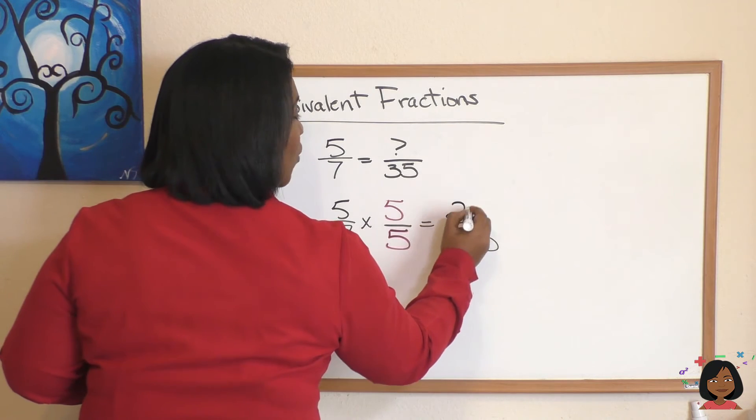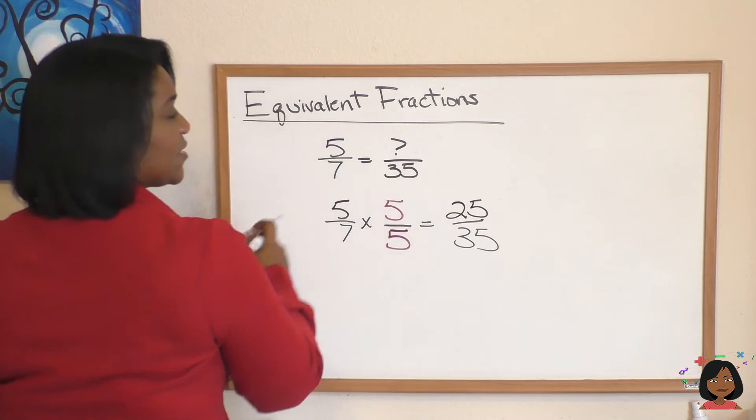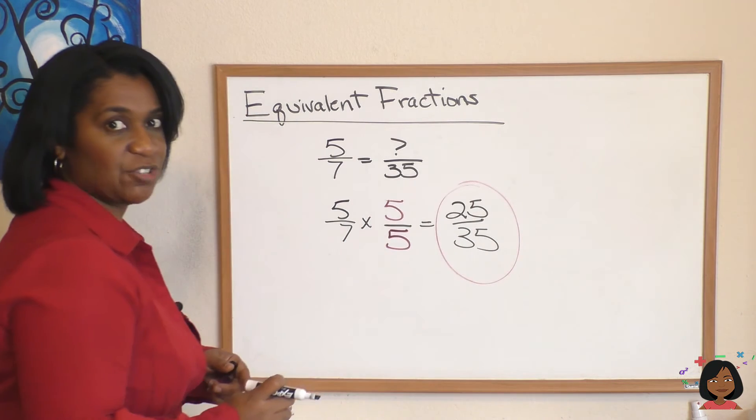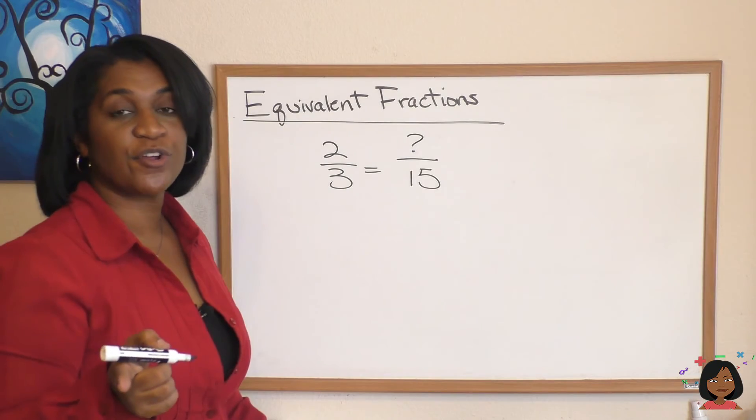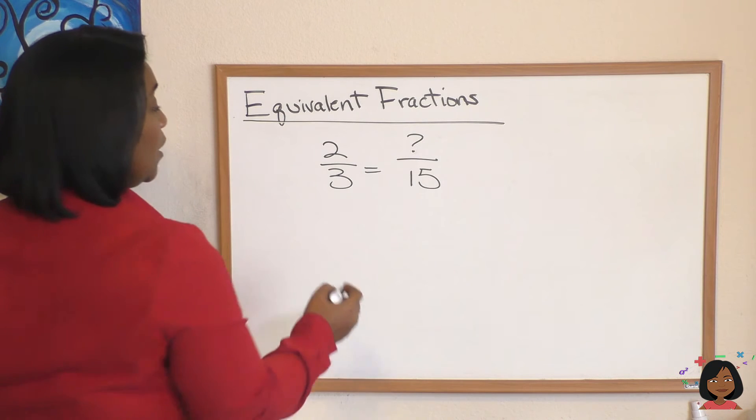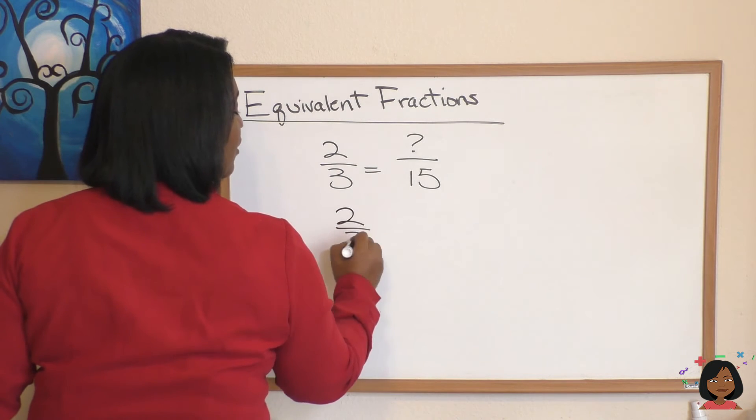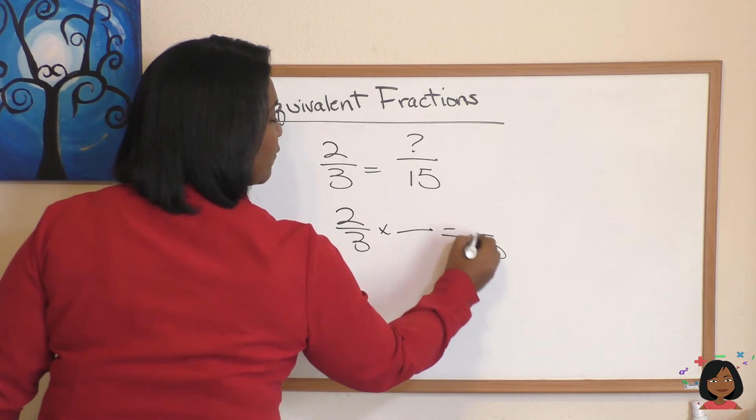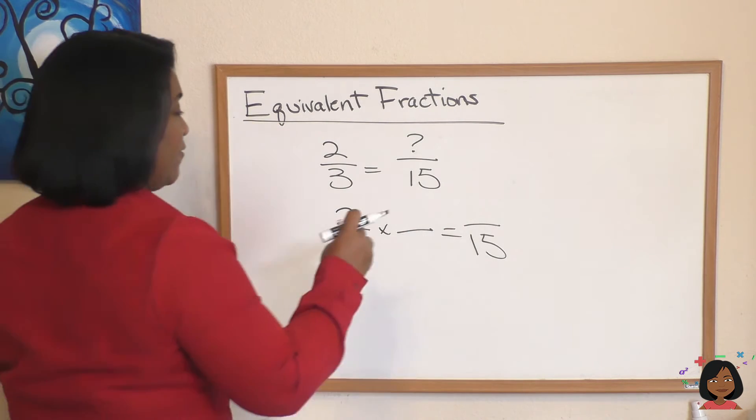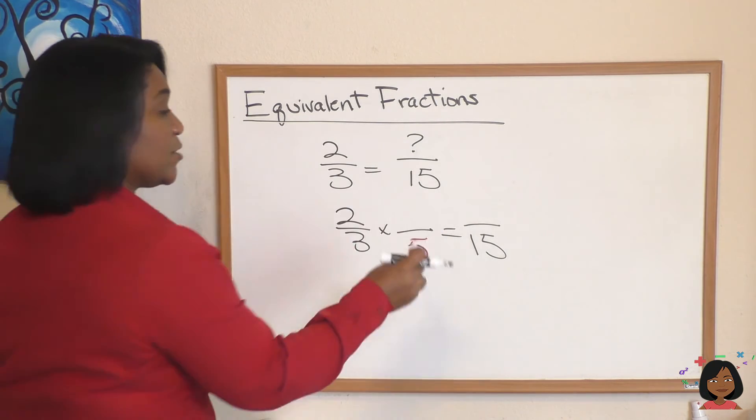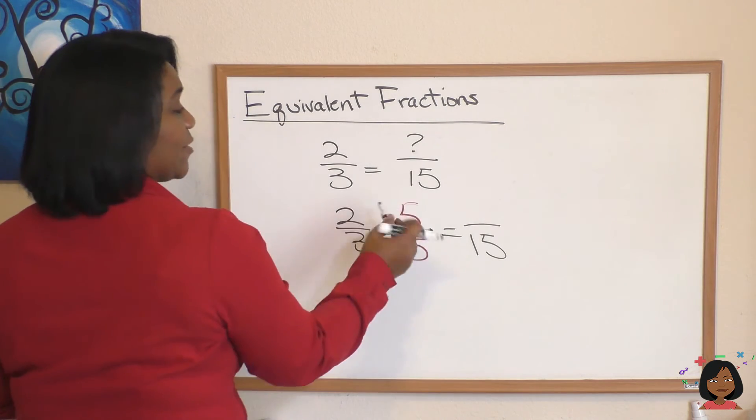So five-sevenths is 25 over 35. Let's try another one. Two-thirds equals what number over 15? Well, let's think. Two-thirds times what fraction is going to give me something over 15? Well, three times five is 15. What you do to the bottom, you've got to do to the top. Five times two is 10.